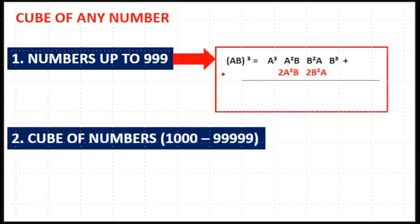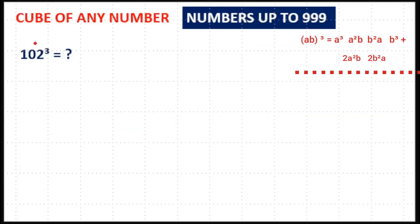For numbers up to 999, we use a simple method. Now, here split 102 as 10 and 2. That is 10 as A and 2 is B.